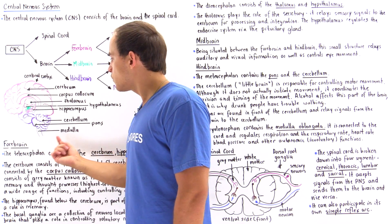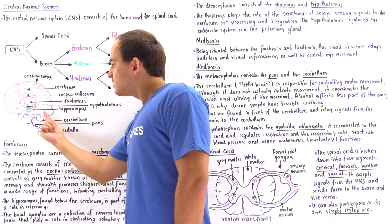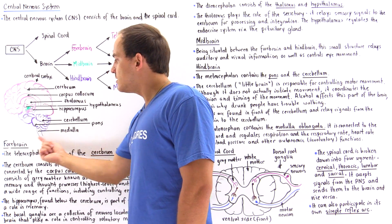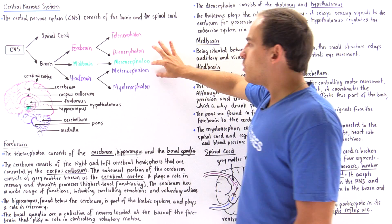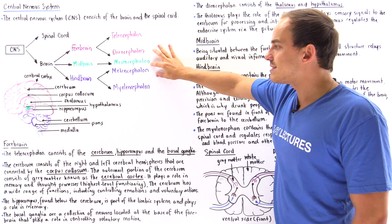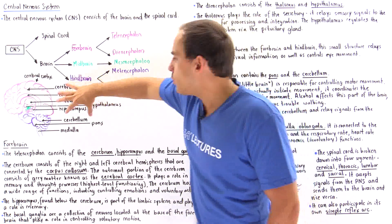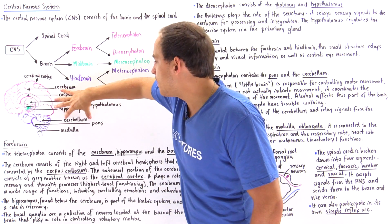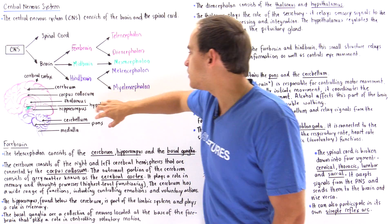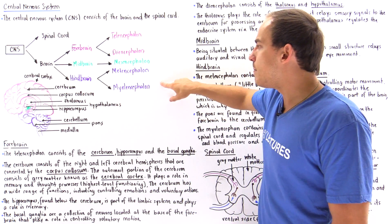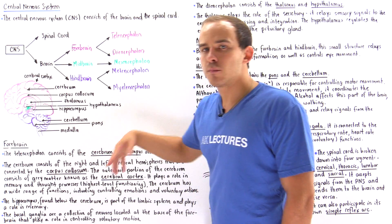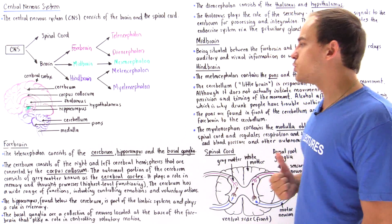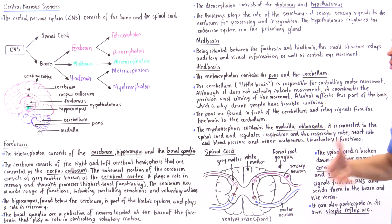Let's move on to the hindbrain, the lower portion of the brain. Within the metencephalon, we have the cerebellum and the pons. Within the myelencephalon, we have the medulla, also known as the medulla oblongata.